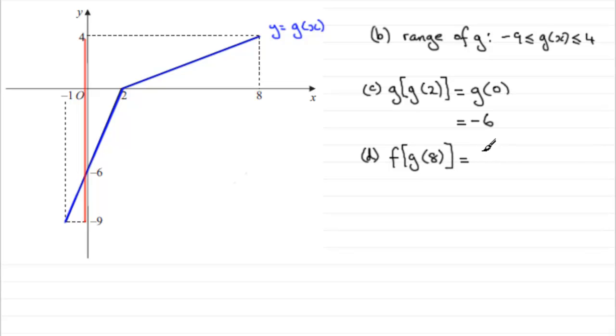And if we're doing this it will be f of whatever g of 8 is. And what is g of 8? Well when x is 8 notice that we get 4. So it's f of 4.